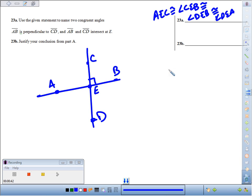Justify your conclusion from part A. Like I said earlier, we could justify that using the right angles congruence theorem or the vertical angles congruence theorem.